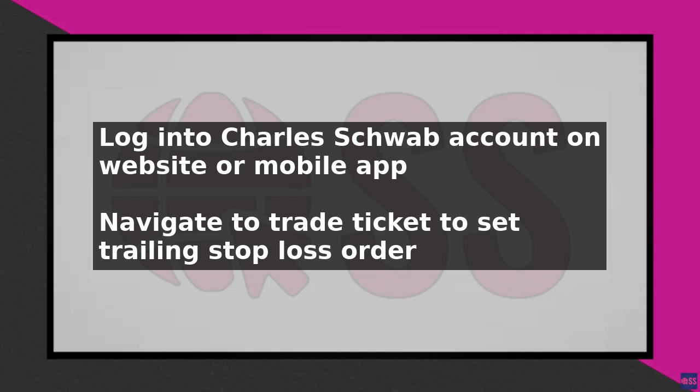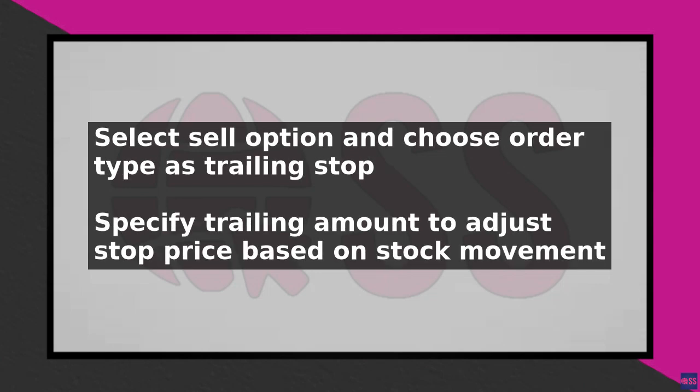In the trade ticket, select the sell option and choose the order type as trailing stop. A trailing stop is a type of stop loss order that automatically adjusts the stop price based on the stock price movement. You will need to specify the trailing amount — the amount by which the stop price will trail the stock price. For example, if you set a trailing stop loss of 10%, the stop price will be 10% below the highest price the stock reaches while you own it.